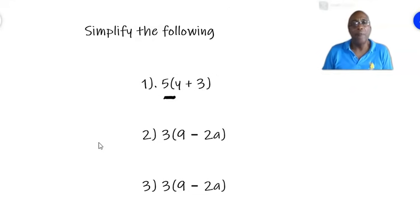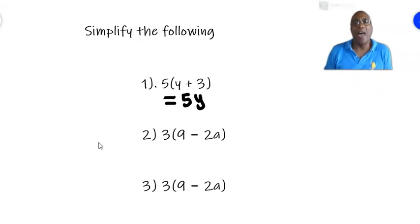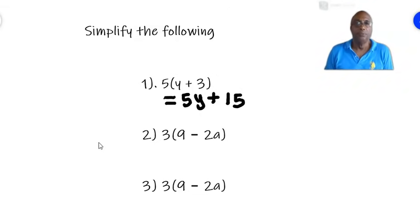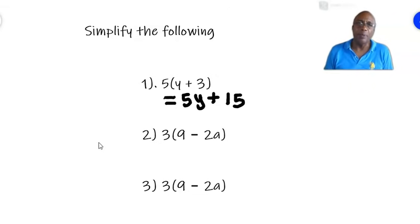Therefore, if we multiply 5 times (y plus 3) in the bracket, we say 5 times y is 5y. And 5 times plus 3 — that's a plus times a plus, which is a plus. And 5 times 3 is 15, so this is plus 15. And that is the simplified answer to the expression 5 times (y plus 3).